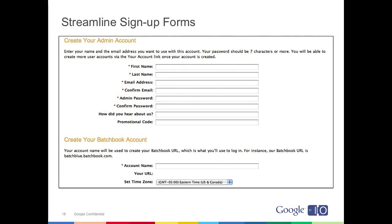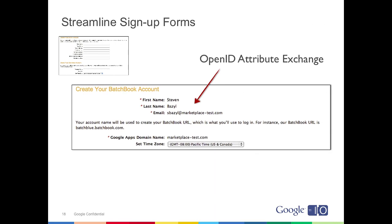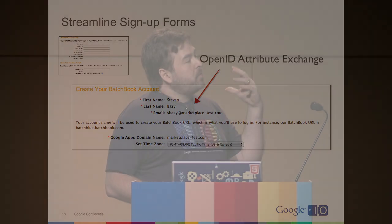Let's take a look at this in practice. This is a screenshot from BatchBook, a CRM application in the Marketplace. This is their sign-up form that users who come directly to their site would see. It looks much like any other sign-up form on any other web application. The problem is the longer and more complicated these forms become, the more reason there is for users to abandon your sign-up funnel. When they integrated with the Marketplace, they were able to take advantage of Attribute Exchange and OpenID to simplify this greatly. The result is a form that is basically one field asking for their time zone — they eliminated the need to ask for name, email, and password.